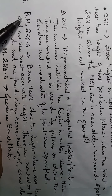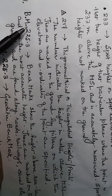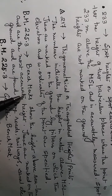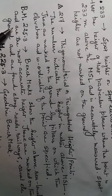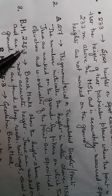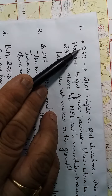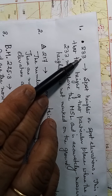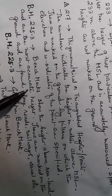BM 225.3 refers to benchmarks. Benchmarks show the height above sea level and are the most accurate height. Notice the height is given to the first decimal place — for example 225.3 — whereas others like 233 or 217 are whole numbers. That is why benchmarks are considered the most accurate height.